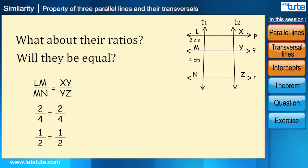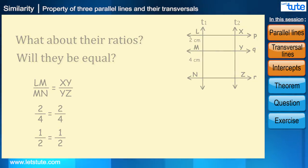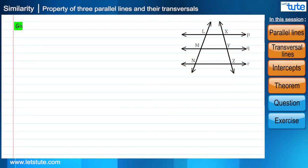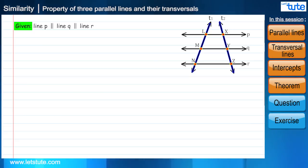But what if we move transversal lines around? Do we get the same result? Let's see. Here it's given line P parallel to line Q parallel to line R. T1 and T2 are transversals. Transversal T1 intersects the lines at points L, M, and N, and T2 intersects the lines at points X, Y, and Z. We have to prove LM divided by MN equal to XY divided by YZ.